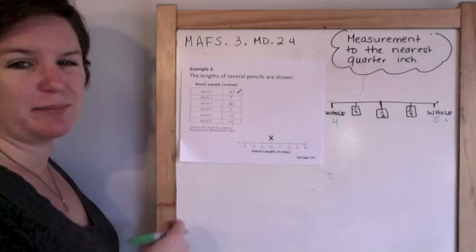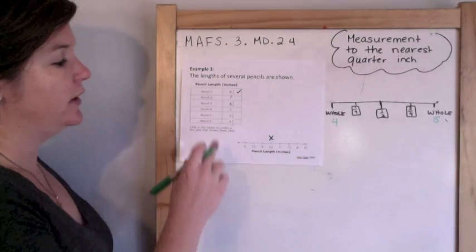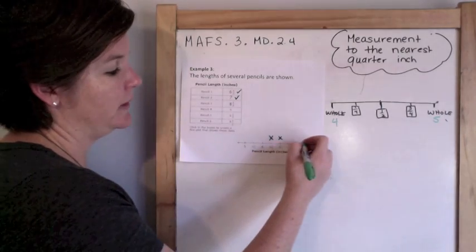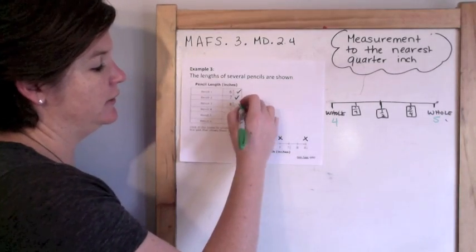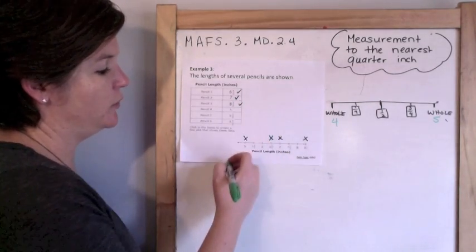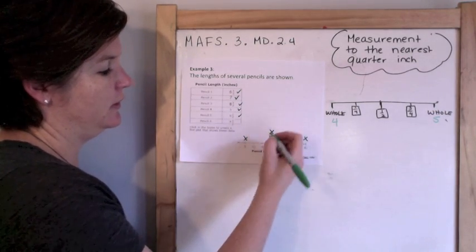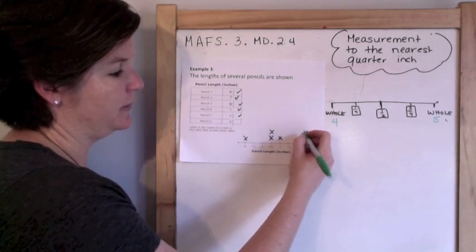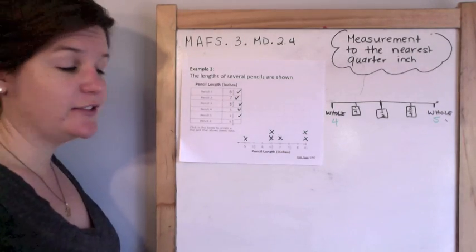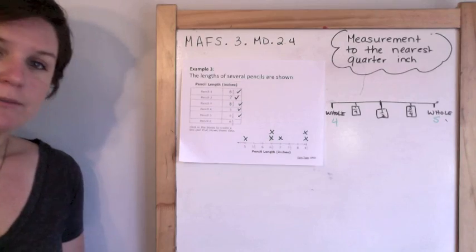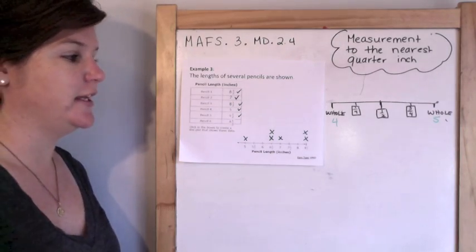So the best thing we can do is draw in X's for this line plot. So pencil one is six and a half. Just putting a check mark to make sure that I've already done it. Pencil two is seven, done that one, eight and a half for pencil three, five for pencil four, and six and a half, and eight and a half. All right. That's all you got to do.